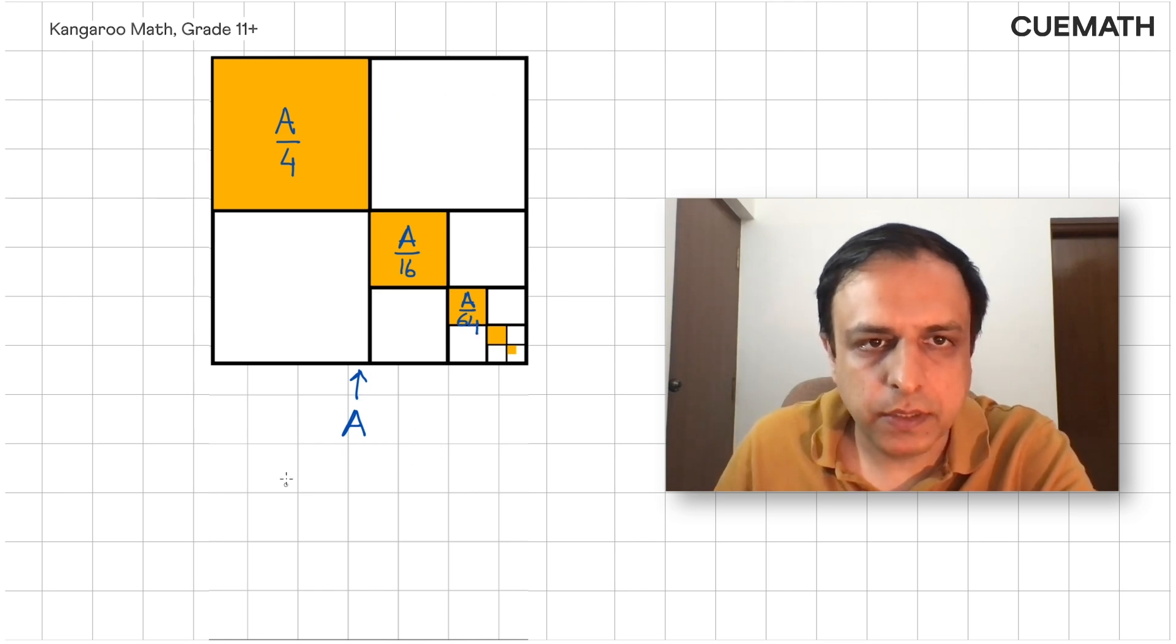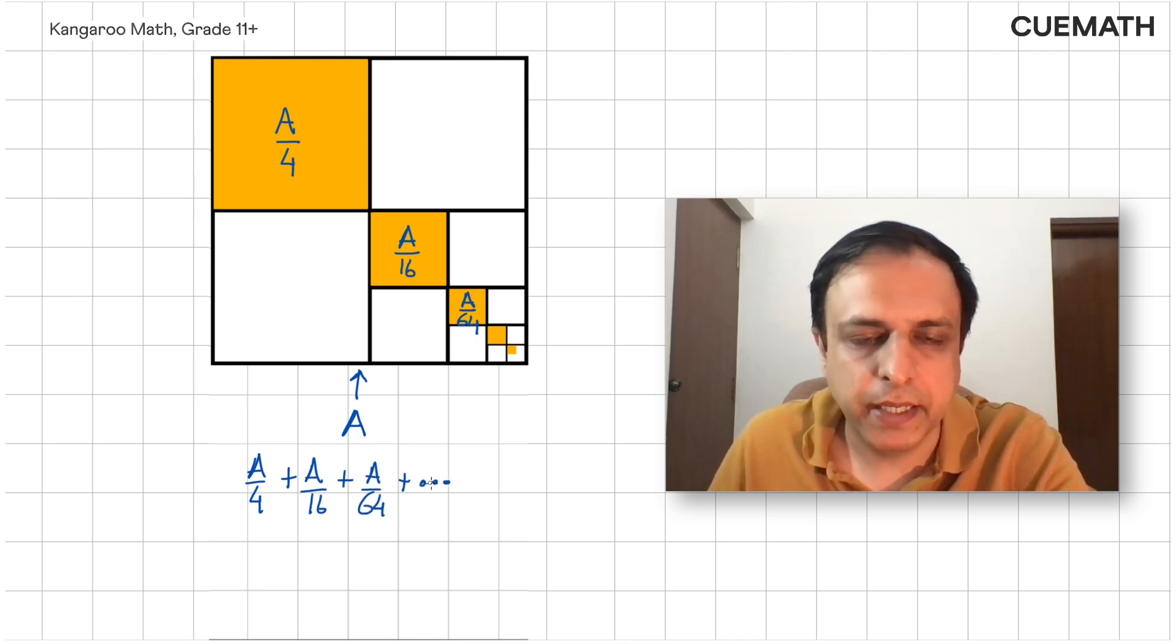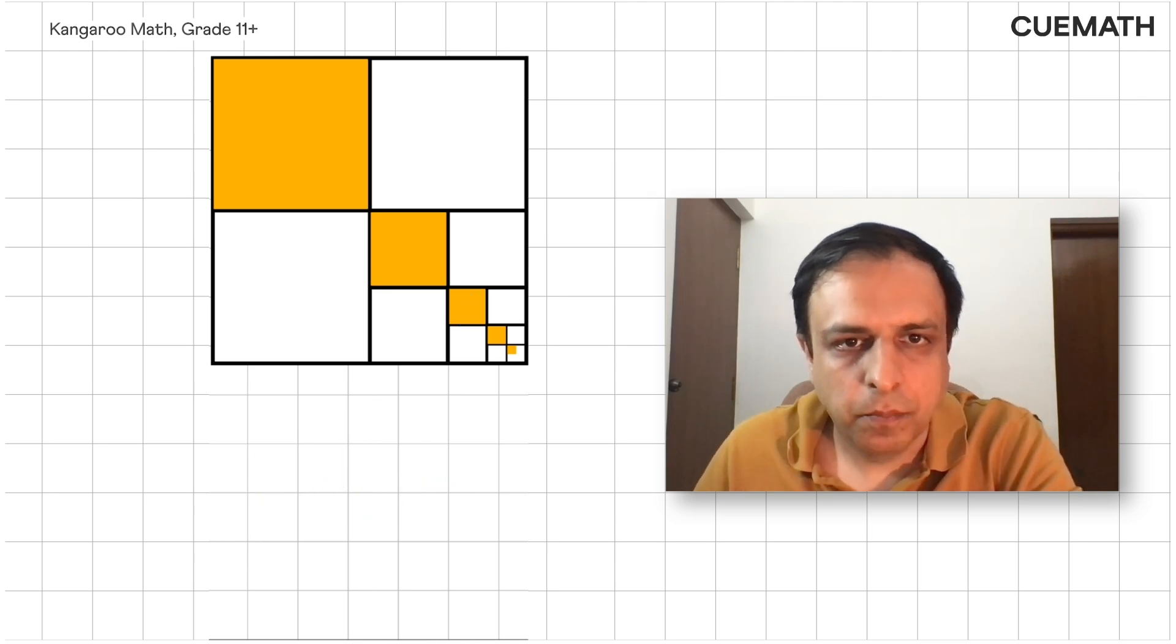So the total area of the yellow squares will be A by four plus A by 16 plus A by 64 and so on. An infinite geometrical progression and it's very easy to find the total area. But here's a far more elegant way.